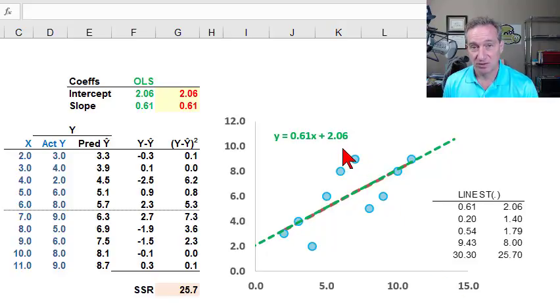The most common approach to linear regression is to generate ordinary least squares regression coefficients, and these are the coefficients that minimize the sum of squared residuals.